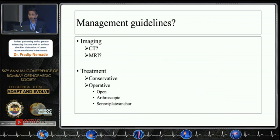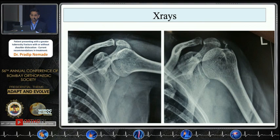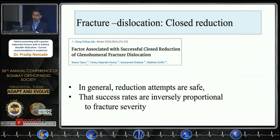Management guidelines: should you obtain CT or MRI? Treatment can be conservative or operative — there are no clear-cut guidelines. However, X-rays can miss fractures. Even a slight difference in rotation of the X-ray could cause you to miss the greater tuberosity fracture entirely, so when in doubt, a CT scan should be performed.